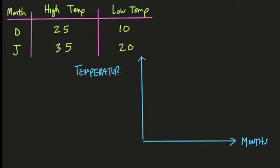So I've started to set this up. Next thing I might do is add in a title, like high and low temperatures, or average temperatures for months. I would just put something simple, like high and low temperatures.